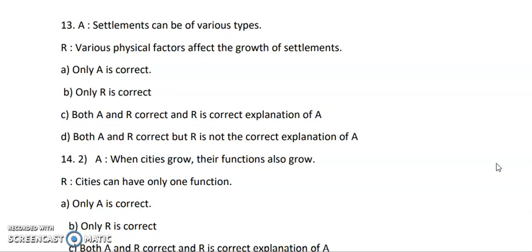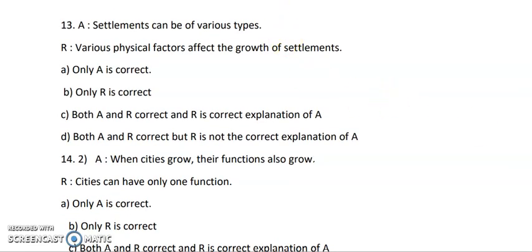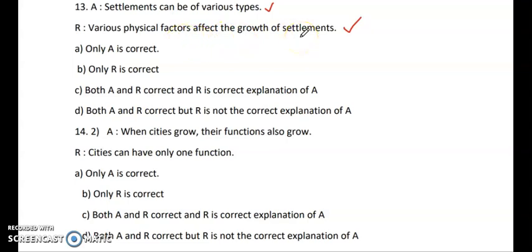Question 13 — Assertion: Settlements can be of various types — nuclear, isolated, dispersed, rural, urban, and more. Reasoning: Various physical factors affect the growth of settlements. Both statements are exactly correct, and the second statement is giving the correct explanation for A, because physical factors determine the type of settlement that develops. So option C is the right answer.